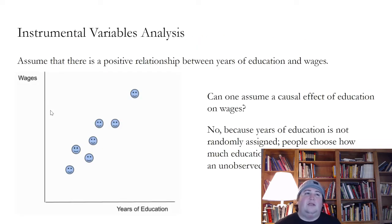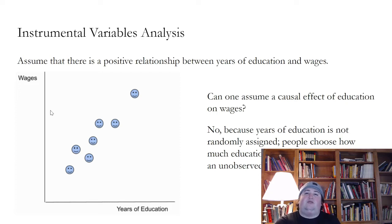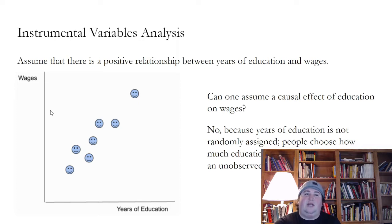Instrumental variables analysis. Assume that there's a positive relationship between years of education and wages. What we're trying to understand here is the relationship between wages and years of education. We assume it's positive — the more you're in school, typically the more you earn. But can one assume a causal effect of education on wages? That is, does more education cause higher wages?